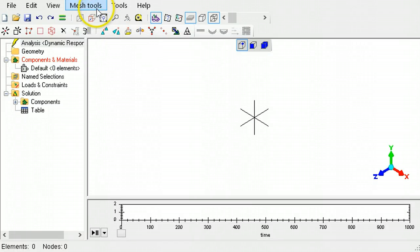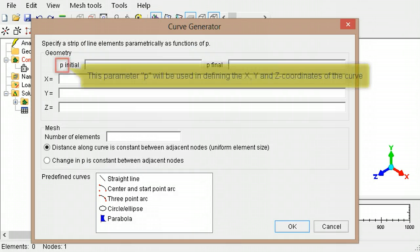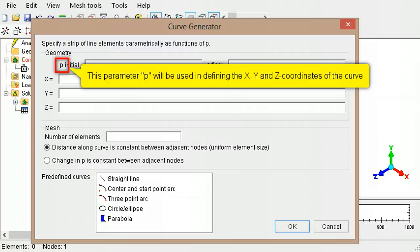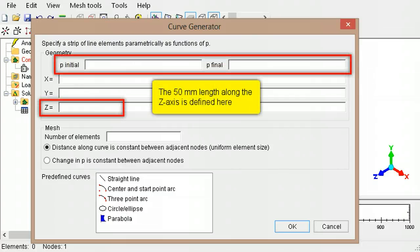To begin, display the curve generator's dialog. The coordinates of the generated nodes will be defined by equations using the parameter p. For the length of the helix along the z-axis, the parameter p is given an initial value of 0 and a final value of 50.